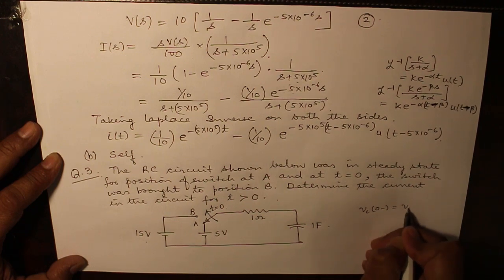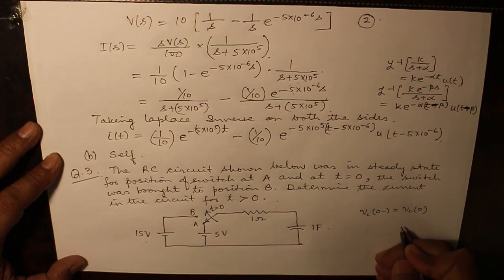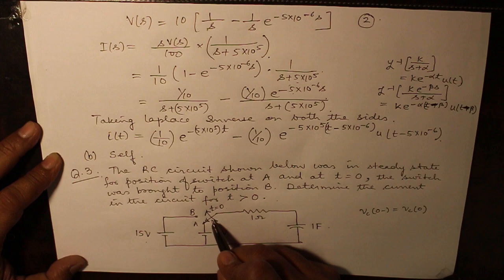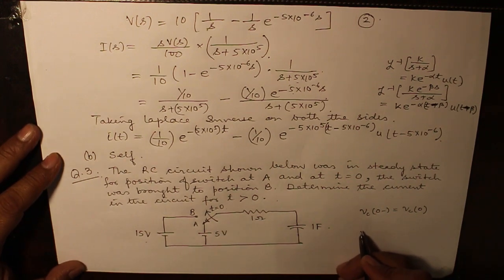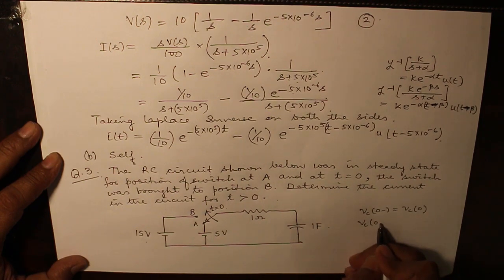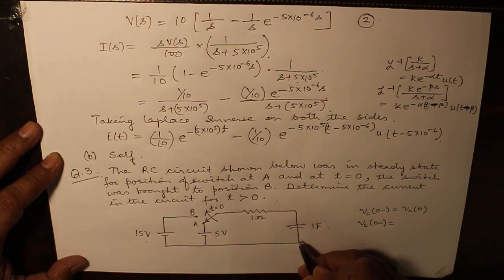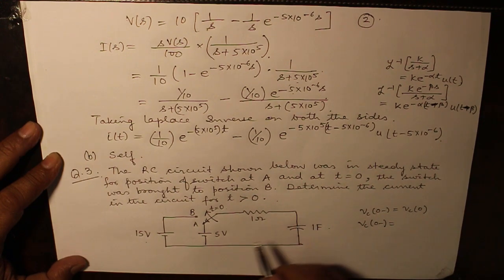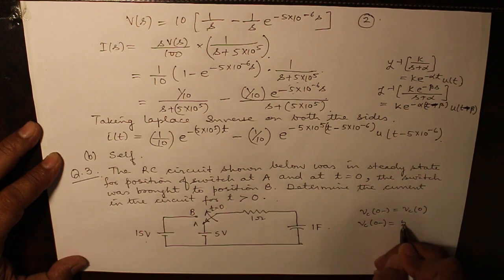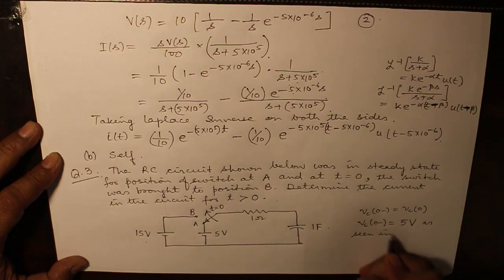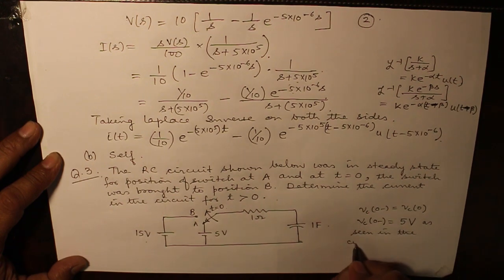V_C(0-) equals V_C(0+). The voltage across the capacitor prior to switching will remain the voltage immediately after the switching has taken place from A to B. So, let us solve this question by using KVL and by realizing that V_C(0-) is the value of voltage at steady state when the capacitor is behaving as an open circuit and 5 volt appears across it. So, V_C(0-) equals 5 volt as seen in the circuit diagram.